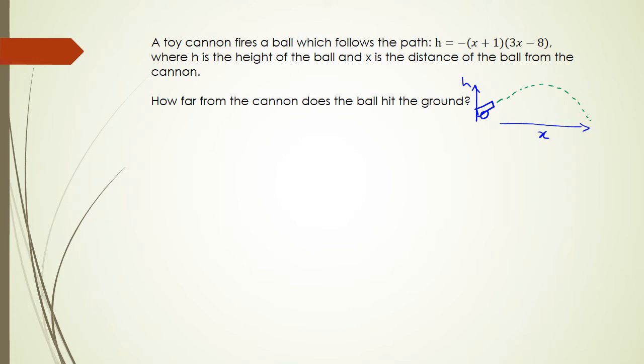If you've done parabolas before, you know that you're literally looking for x-intercepts. In other words, in algebraic terms, when the ball hits the ground, height equals zero. So we've got to figure out what is x when h = 0.